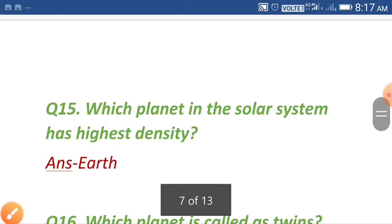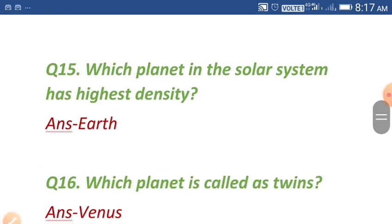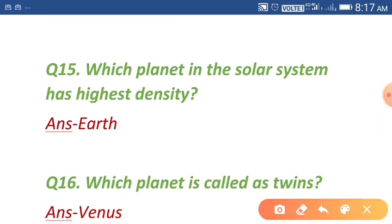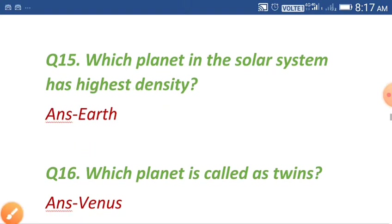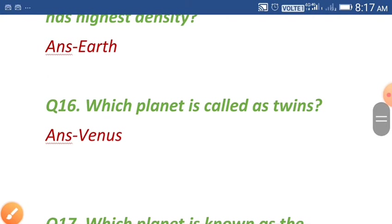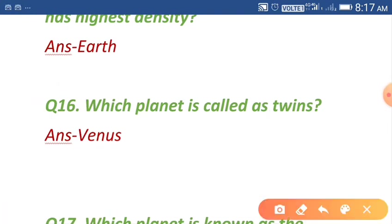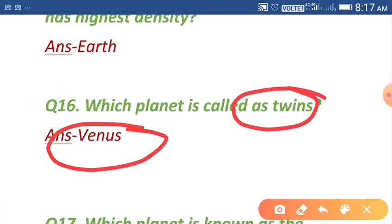Question number fifteen: which planet in the solar system has the highest density? Our beautiful Earth has the highest density in our solar system. Question number sixteen: which planet is called Earth's twin? Venus is known as Earth's twin.